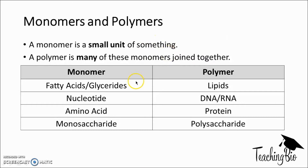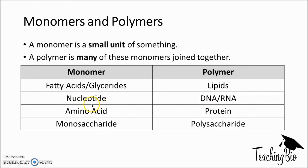The monomers and their respective polymers that you need to know for biology are in this table. You need to know that many fatty acids slash glycerides make lipids, many nucleotides make DNA and RNA, many amino acid monomers make protein, and many monosaccharide monomers make a polysaccharide.